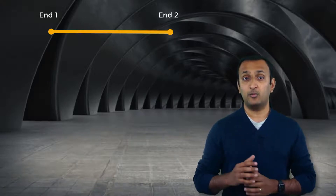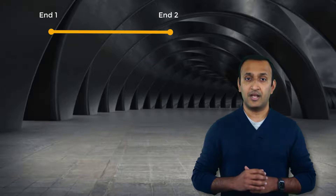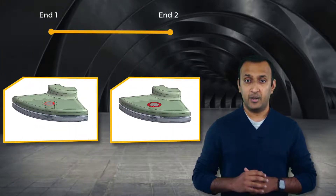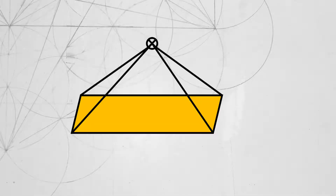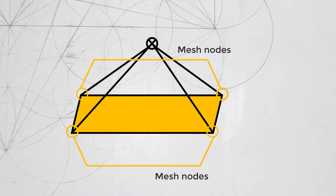A beam connection has two ends that are to be connected to the mating surfaces. They can use an edge-to-edge or a face-to-face connection where one from each component is selected as mobile and the reference side respectively. Beam connections use remote points to connect with the edges or faces selected as reference and mobile. Remote points are pilot nodes that are connected to the mesh nodes on the scoped edges or surfaces using constraint equations.